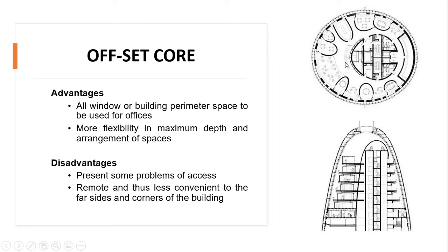The offset core is slightly de-centered but has the same advantage as the central core in that it provides the exterior space for rentals — allowing windows for natural light and ventilation inside the building. It also provides more flexibility in depth and in the arrangement of spaces. The disadvantage is that it presents some problem of access because it is not equidistant from all sides, making the remote corners of the building less convenient to access the core.